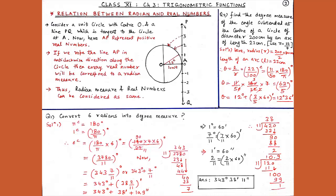Our next question: convert 6 radian into degree measure. Whenever we convert radian into degree, we also express it in minutes and seconds. Since π radian equals 180 degrees, 1 radian equals 180 upon π degrees. By unitary method, 6 radian equals 180 upon π into 6 degrees. Putting π equals 22/7, we get 3780 upon 11 degrees.